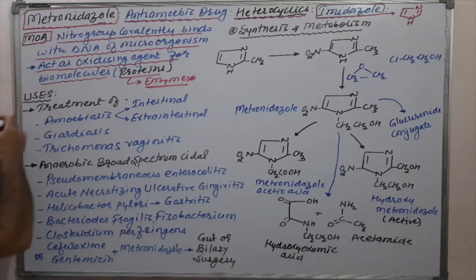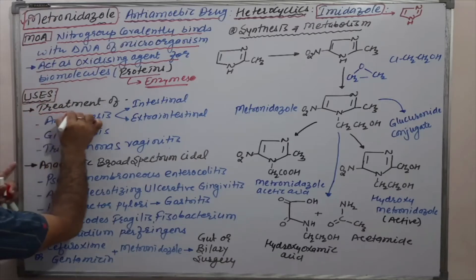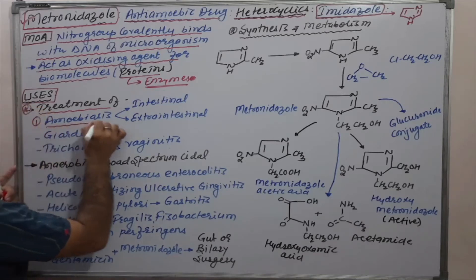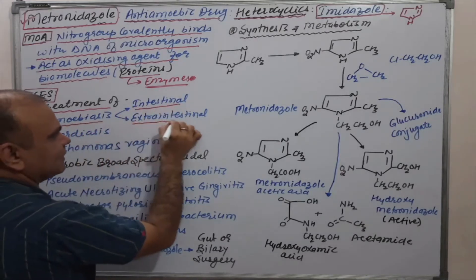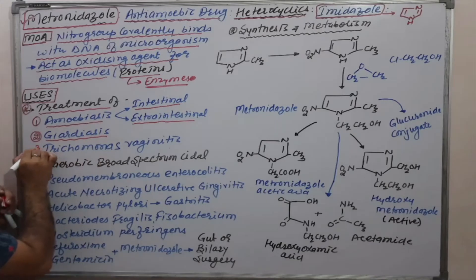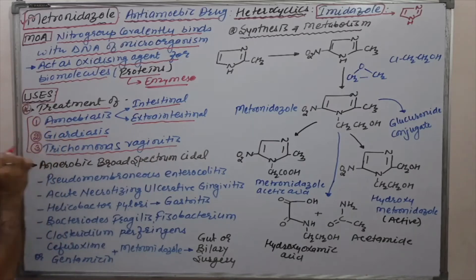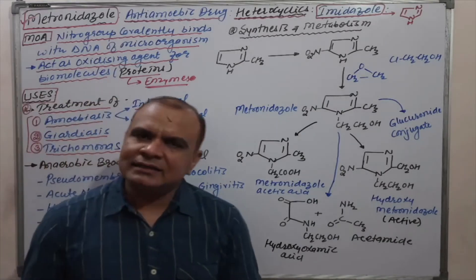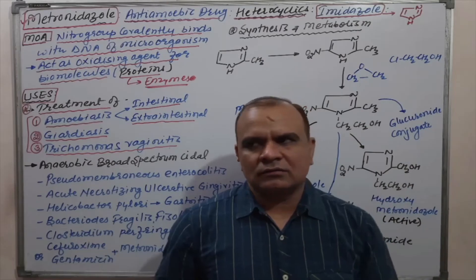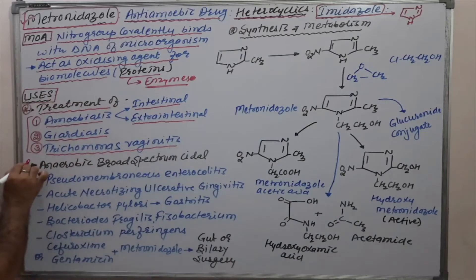Based on this mechanism of action, the uses of metronidazole are: first, treatment of amoebiasis — both intestinal and extra-intestinal; second, treatment of giardiasis; and third, treatment of Trichomonas vaginitis. These microorganisms may be bacteria, amoeba, or protozoa.